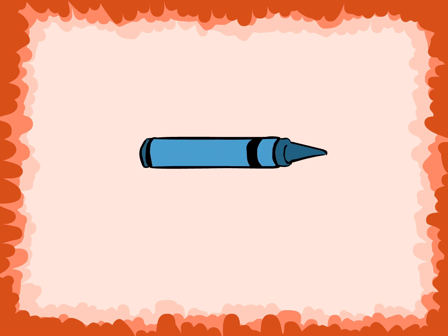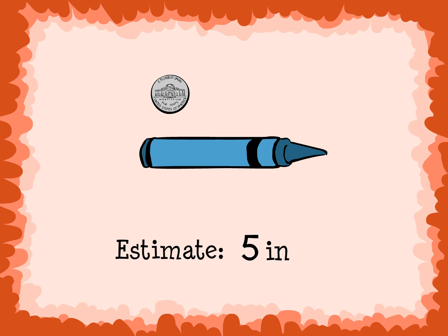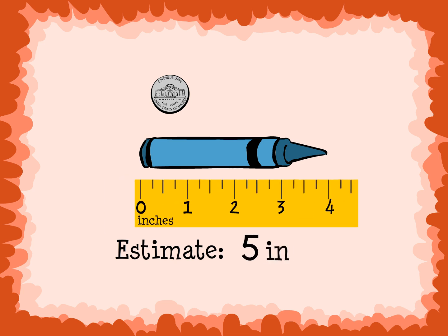We are estimating the length of this crayon. It is bigger than the nickel, so we can use inches to measure it. I estimate about 5 inches. The actual length is about 4 inches. Notice that the edge of the crayon is lined up with the end of the ruler.